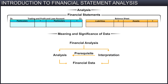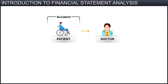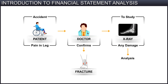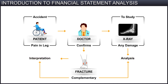Consider this example: an accident patient goes to a doctor saying that he has a lot of pain in his leg. The doctor takes an x-ray to study whether or not there is any internal damage — this is analysis. Now, based on his analysis of the x-ray, and by understanding the meaning and significance of its contents, the doctor confirms there is a fracture — this is interpretation. So we can say that analysis and interpretation are complementary to each other.